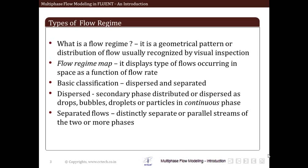On a broader sense, flow regimes are classified as dispersed and separated. Under the dispersed flow regime, the secondary phase is distributed or dispersed as drops, bubbles, droplets or particles in a continuous phase. Whereas in a separated flow we see distinctly separate or parallel streams of two or more phases. Whenever we see drops, bubbles, droplets or particles we infer it is a dispersed flow regime, and when we see distinctly separate or parallel streams with an interface between them it is a separated flow.